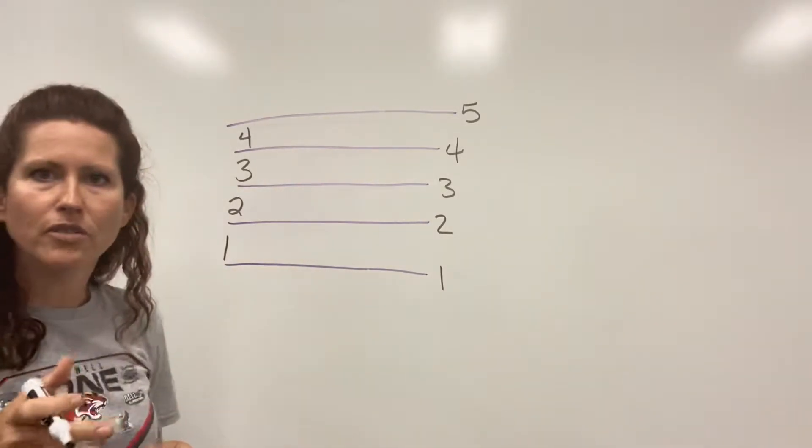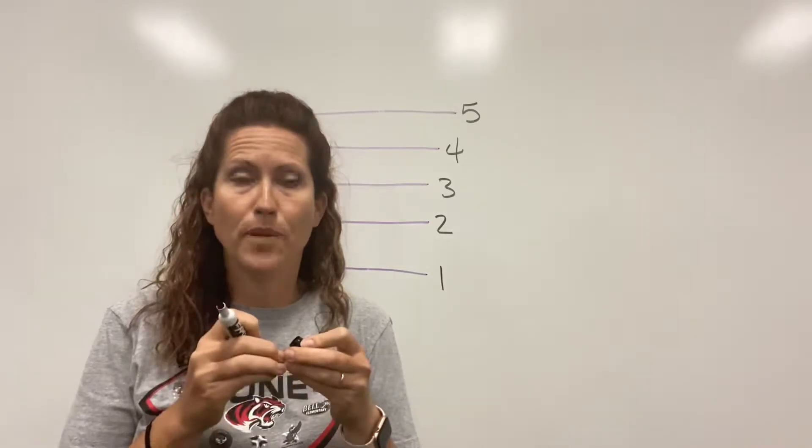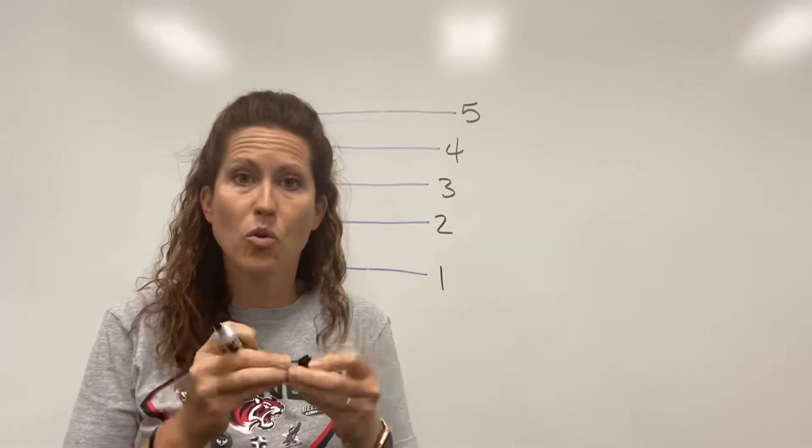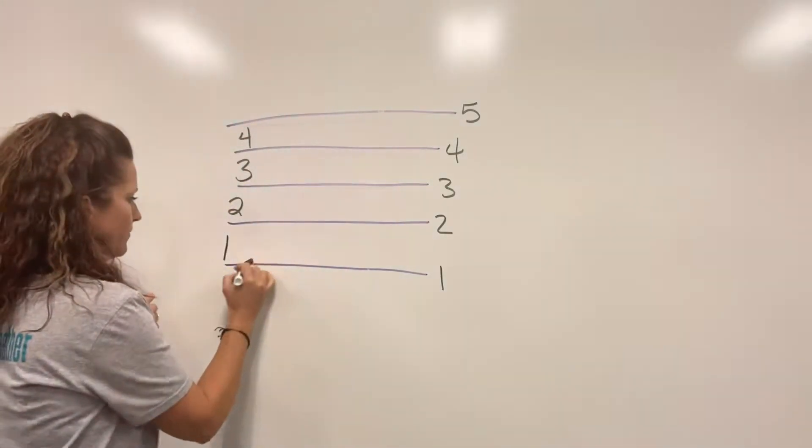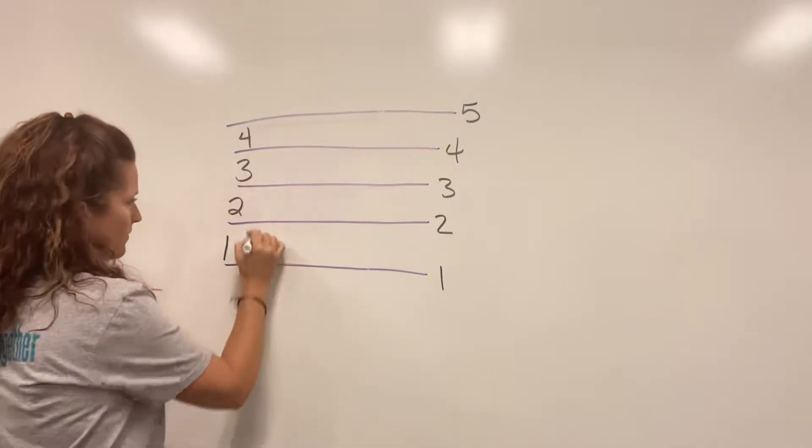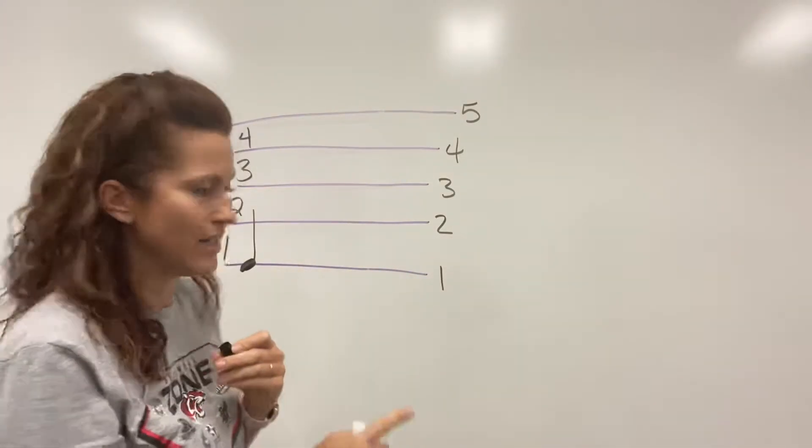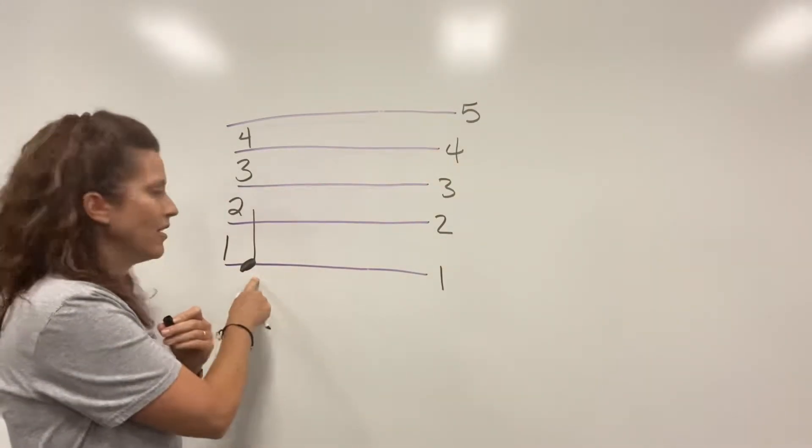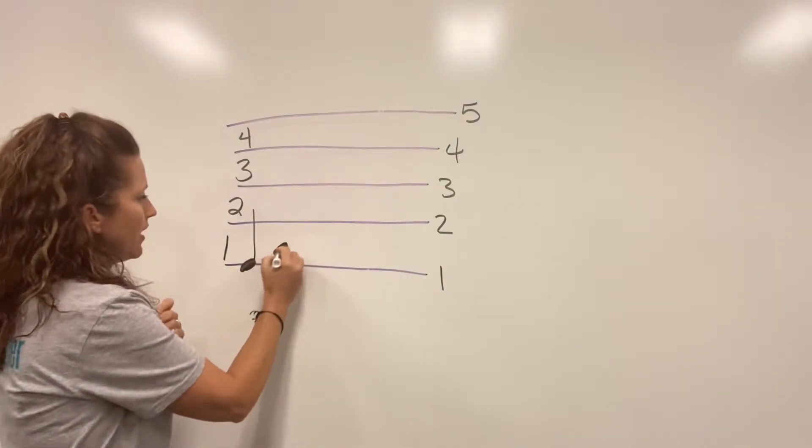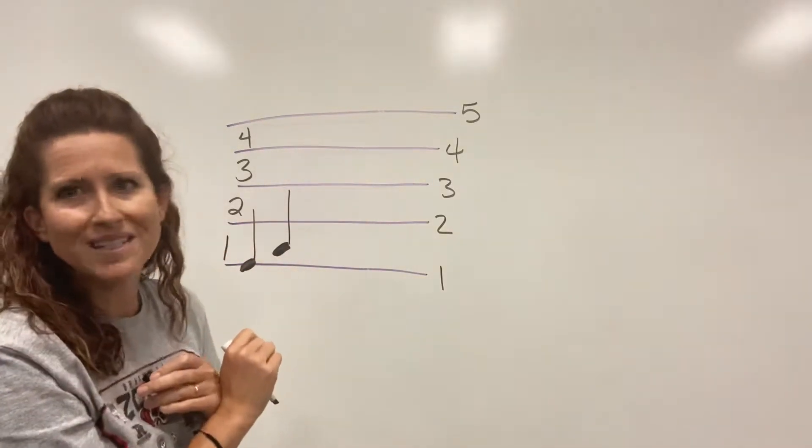So the way that you can tell if a note is on a line or a space is you look at the center of the note. Earlier this week we talked about quarter notes and so if I were to draw a quarter note here this would be on the first line because the center of the head, the note head, is in the center of the line. If I was here and I drew it in the space, this would be on the first space.